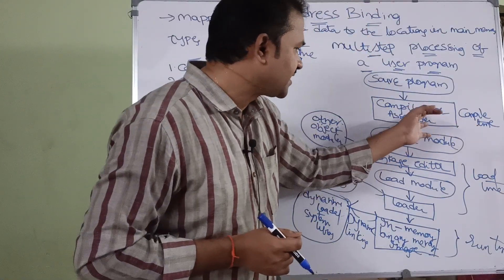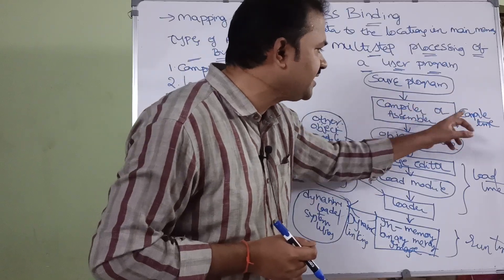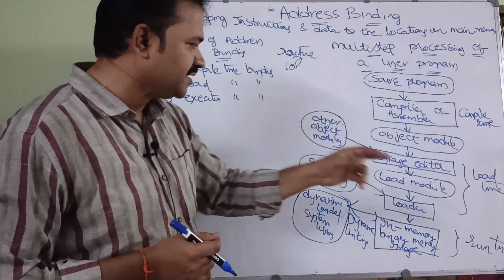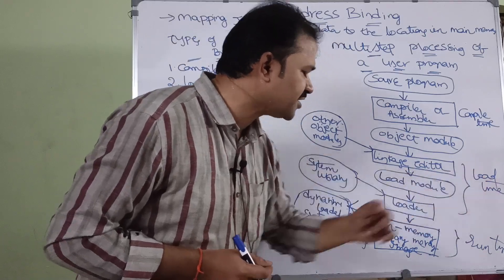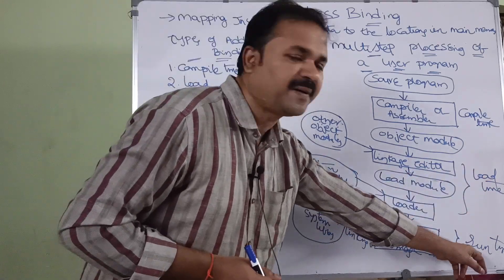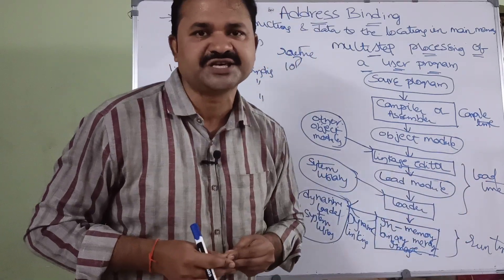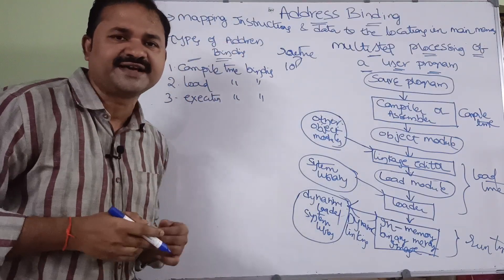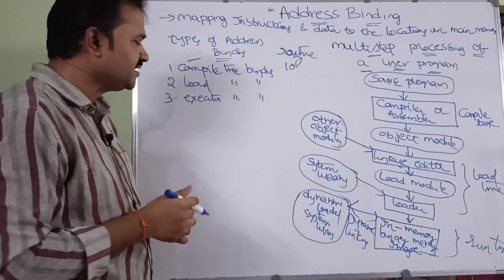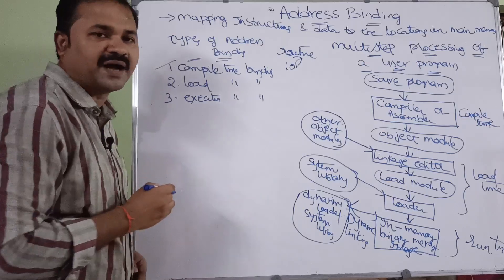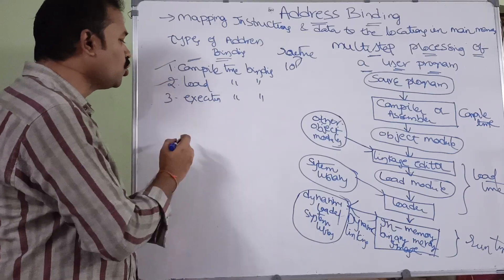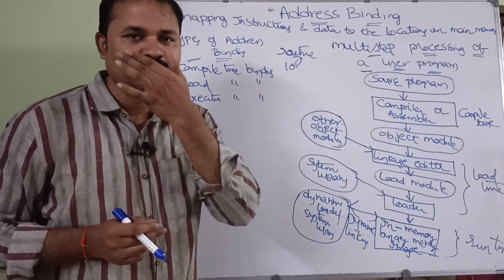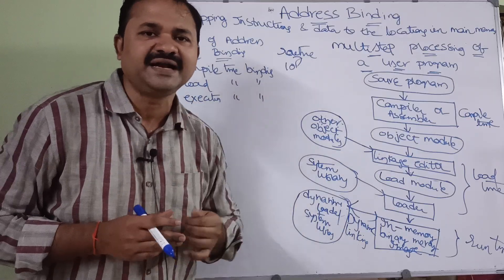In the diagram, the compiler or assembler stage occurs at compilation time, the loader stage is load time, and the final stage is runtime or execution time. There are three types of address bindings: the first is compile time binding, the second is load time binding, and the third is execution time binding.